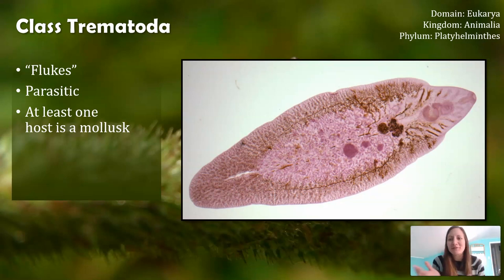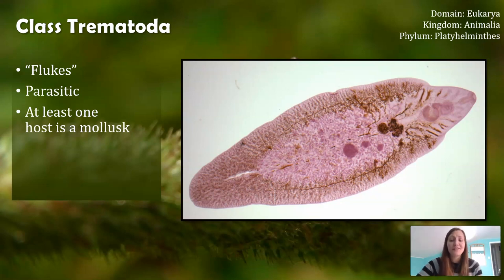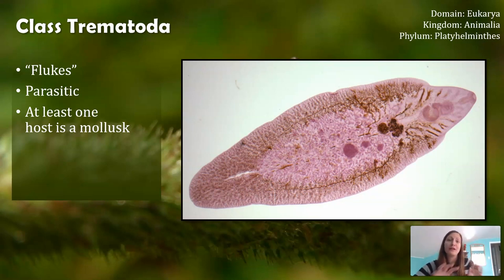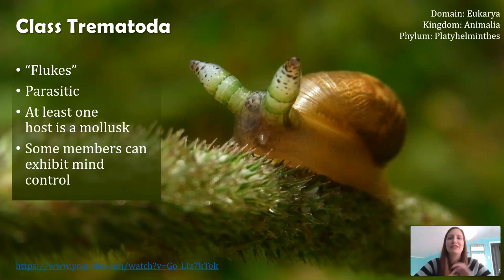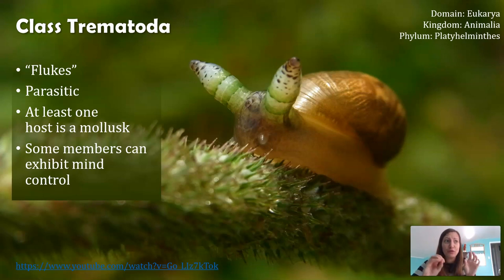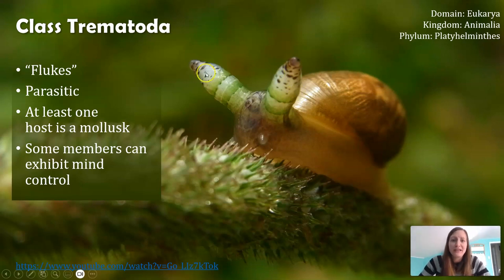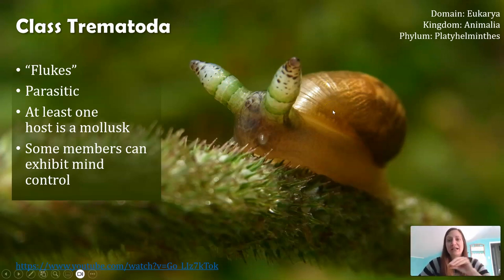The one I want to highlight — without talking about the species specifically — is a species of trematode that infects two different organisms, so it has two hosts. One of those hosts is a snail, and it turns that snail into a zombie. What you're seeing here is a snail that's been infected by this trematode, which is in its larval stage inside the snail.